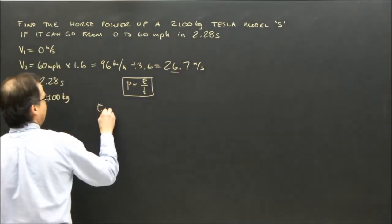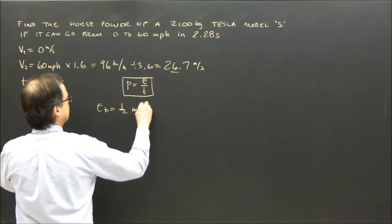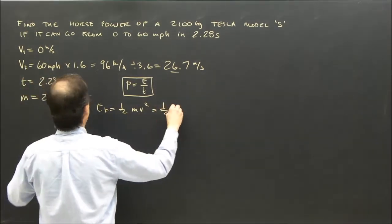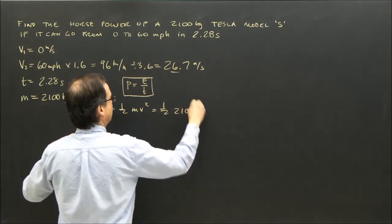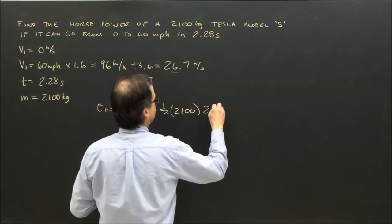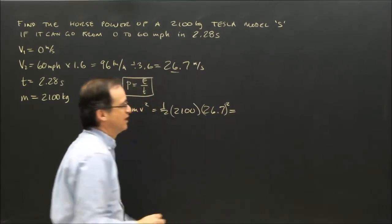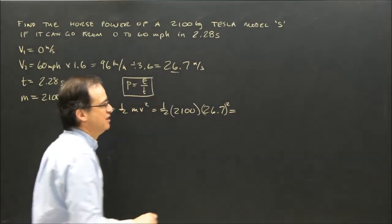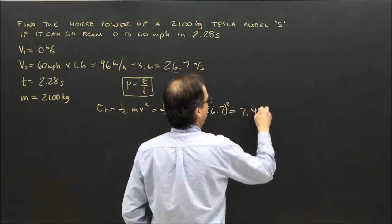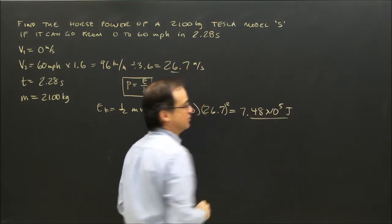I solved for the kinetic energy. It's one-half the mass times V squared. So it's one-half times 2100 times 26.7 squared. The kinetic energy is 7.48 × 10⁵ joules.